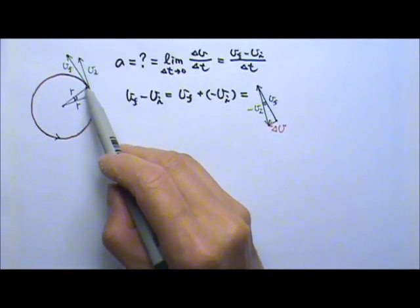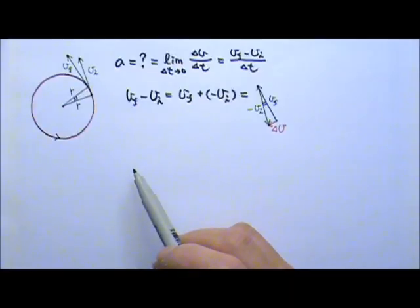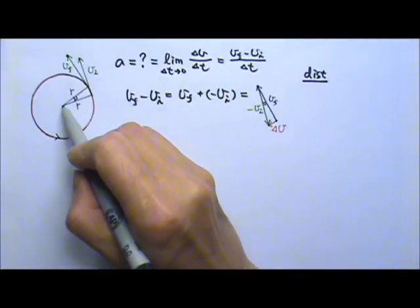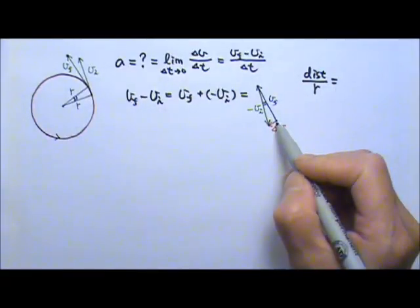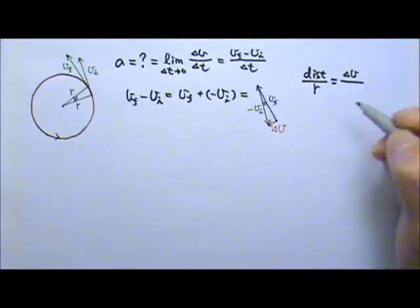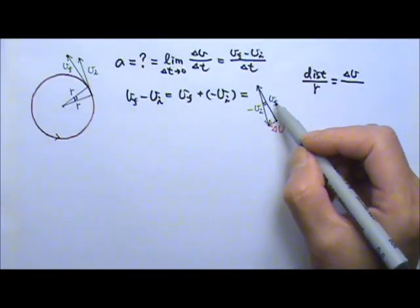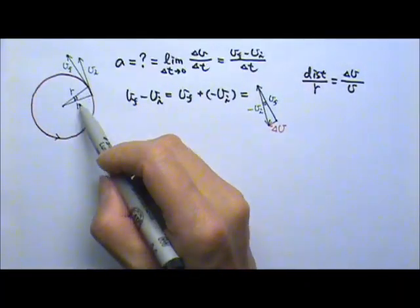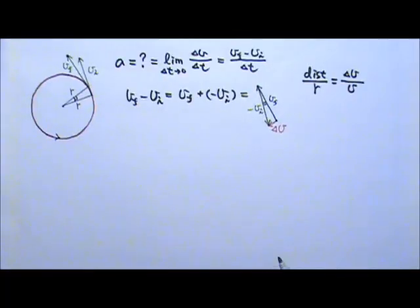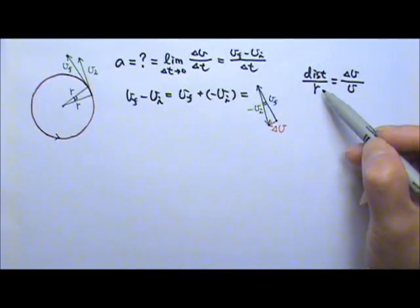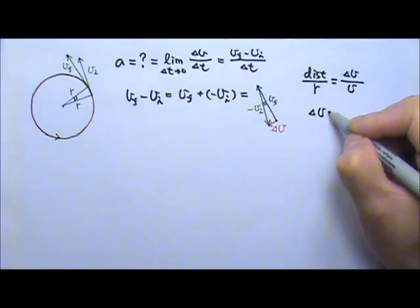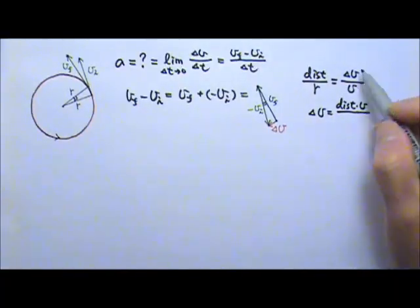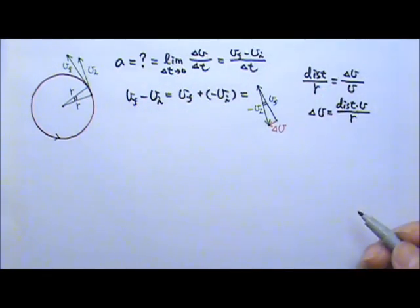Which means the distance traveled during that short amount of time — this length of the arc, which is kind of like the straight side of this triangle — so the distance traveled to the r would equal to delta v to the speed. Since they have the same speed, we're just going to use v for the speed. So distance traveled to r equals delta v to the speed. Now if you cross multiply and then divide by r on both sides, you can get delta v: that's distance traveled times the velocity divided by r.